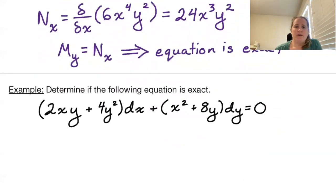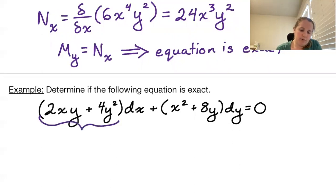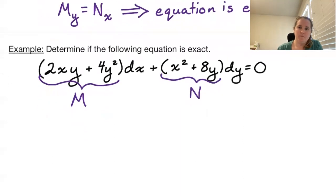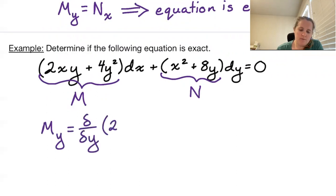We are again looking to see if an equation is exact. We have 2xy plus 4y squared, all multiplied by dx, plus x squared plus 8y, all multiplied by dy. So 2xy plus 4y squared is my M, and x squared plus 8y is my N. Taking the partial with respect to y of M, we look at the partial with respect to y of 2xy plus 4y squared.